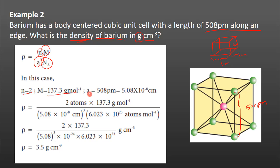A is the edge length — the distance between atoms in the unit cell. The edge length is 508 picometers. Since the density is in centimeter cube, we convert: 508 picometers equals 5.08 times 10 to the power of minus 8 centimeters.